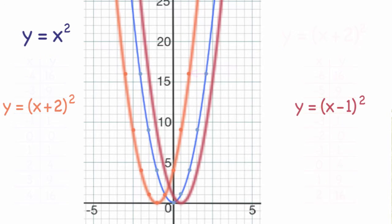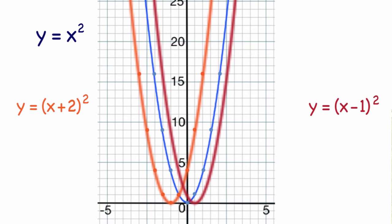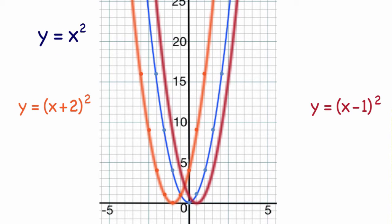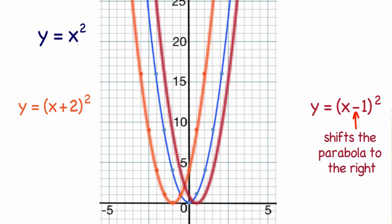It looks like when you have a number inside the parentheses of the parent graph that is squared, it will shift your graph to the right if it's negative, or shift it to the left if it's positive.